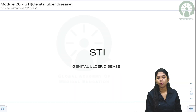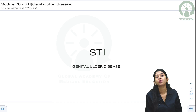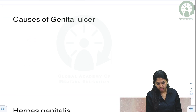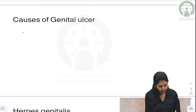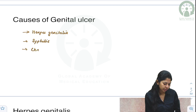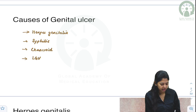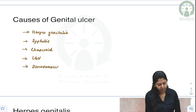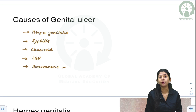Hello students. In this module we will cover sexually transmitted infections and talk about genital ulcer disease. The common causes of genital ulcer are: herpes genitalis, syphilis, chancroid, lymphogranuloma venereum, and donovanosis. These are the five classical causes of genital ulceration.